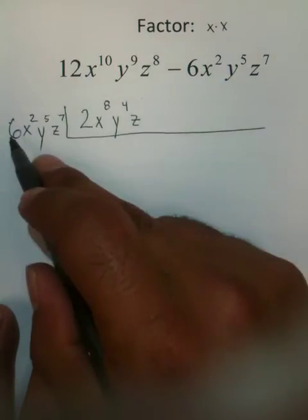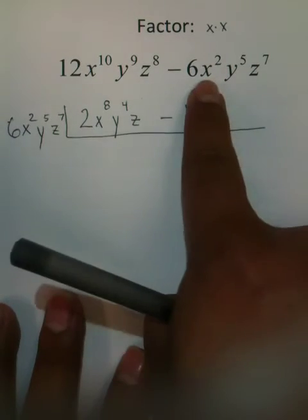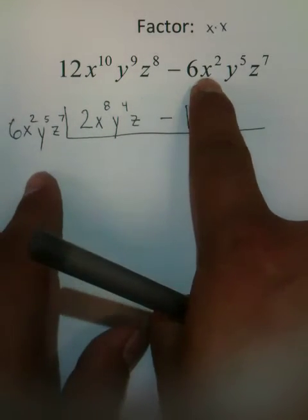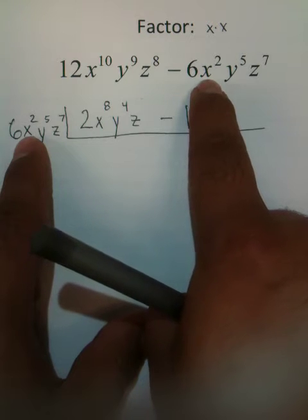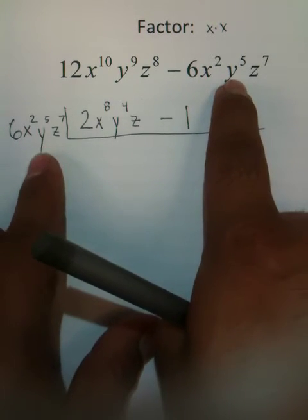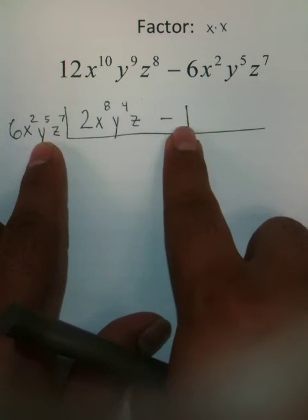Negative 6 divided by 6 becomes negative 1. If you divide x squared by x squared, you're going to get 1 as an answer, which we already have. y to the 5th divided by y to the 5th is 1, which we already have.